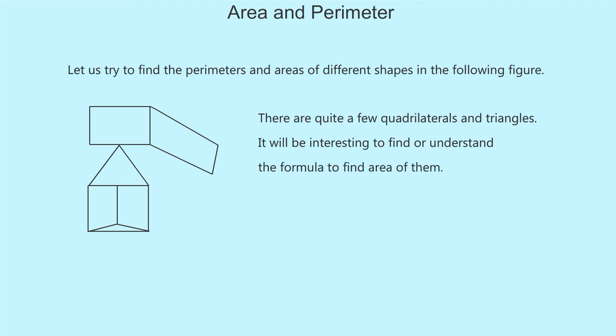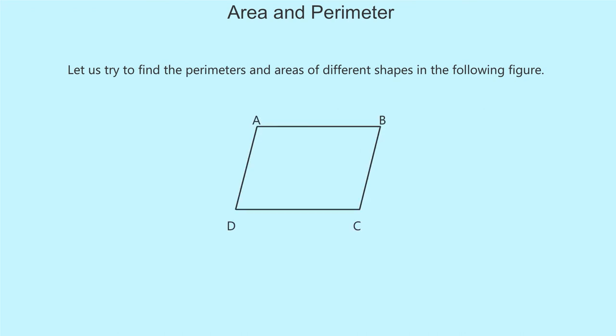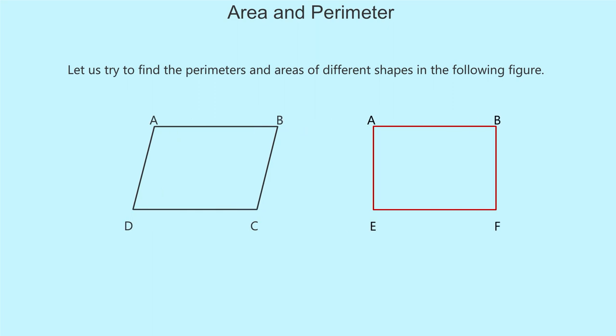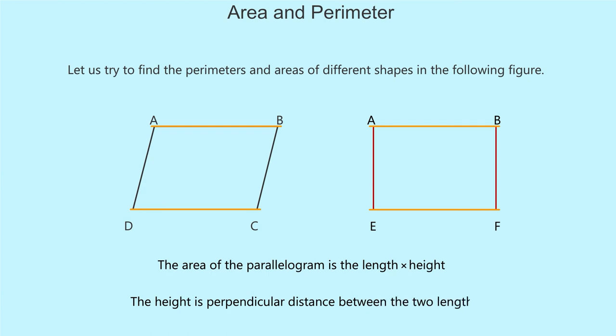Let us consider the parallelogram ABCD. Observe the figure. The triangle shown inside and outside are congruent. So, by removing one joining as BFC, we get rectangle AEFB which has the same area as the parallelogram ABCD. The area of the parallelogram is the length into height. The height is perpendicular distance between the two lengths.